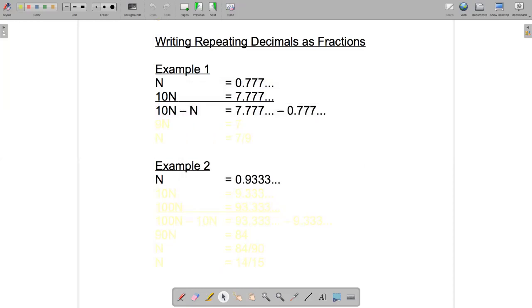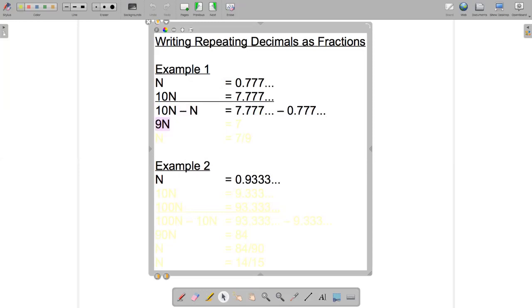Okay and now on the left hand side we've got 9n because we did 10n minus n. On the right hand side we've got a whole number 7. We got rid of that repeating decimal part and that's the trick